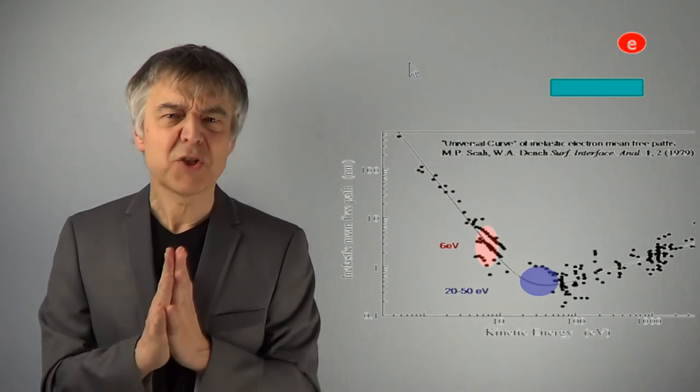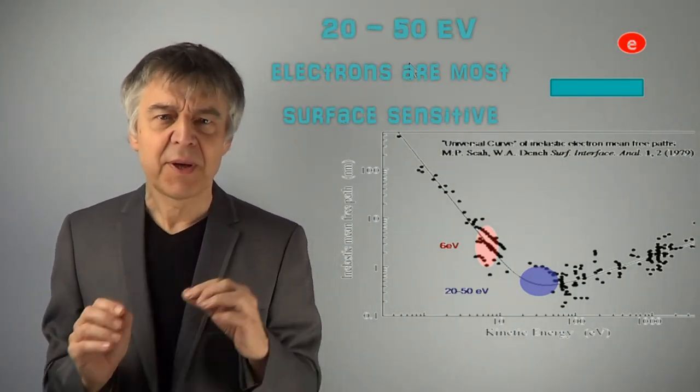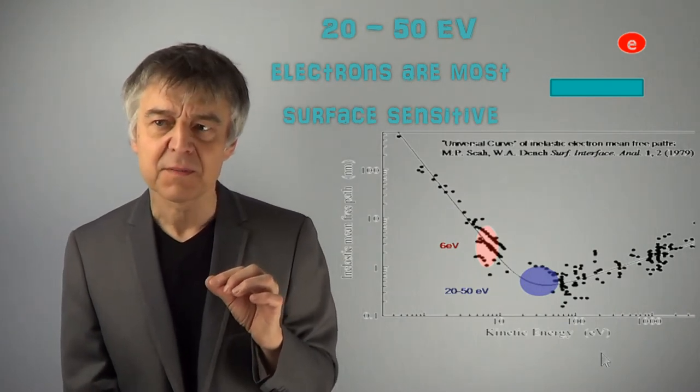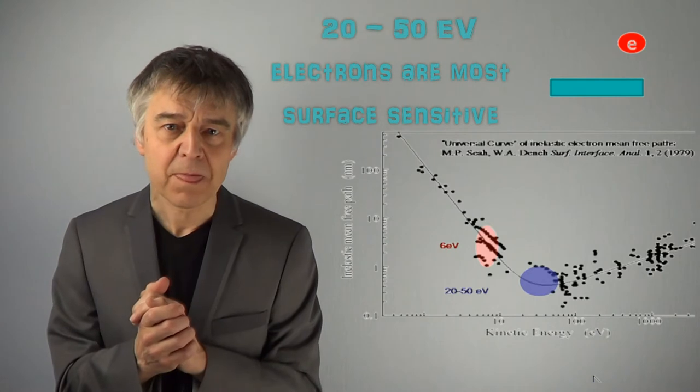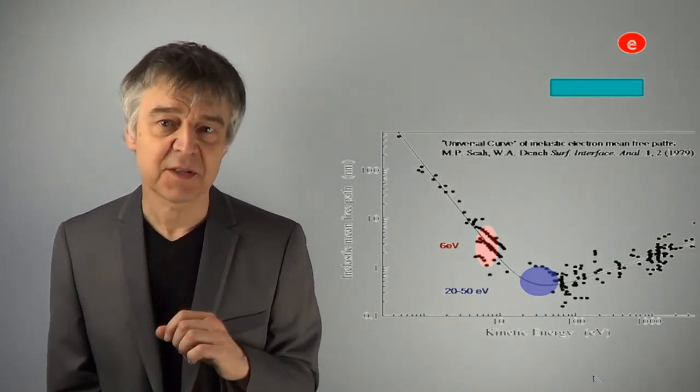Electrons having an energy between twenty and fifty electron volts penetrate less than one nanometer into the surface. Here marked in blue. These electrons are therefore very surface-sensitive probes.